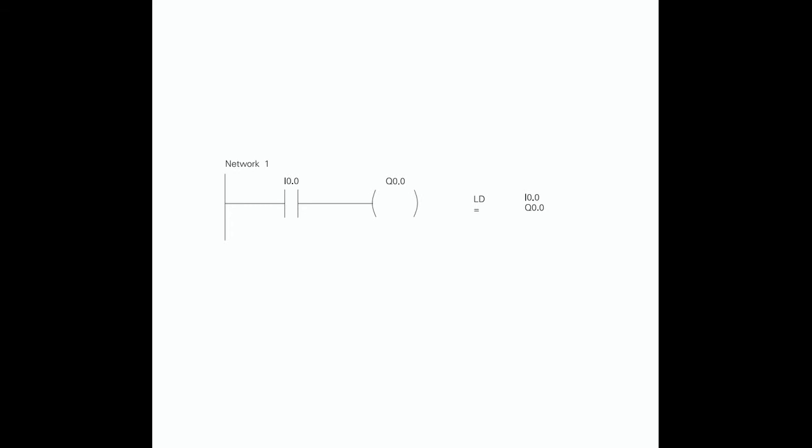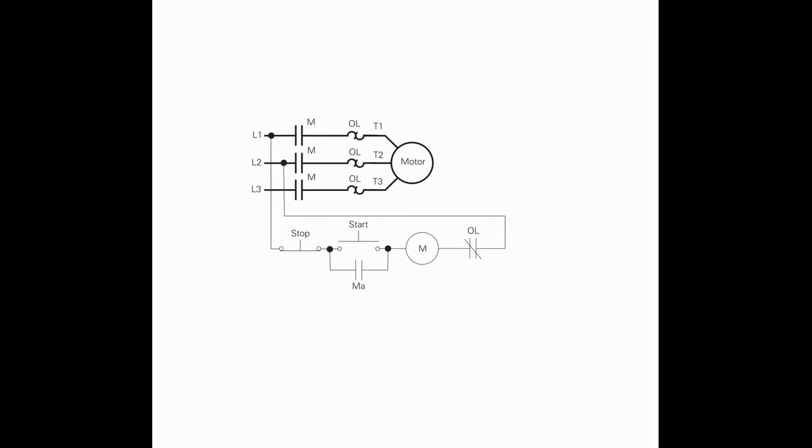Program Instruction: When the switch is open, the CPU receives a logic 0 from input I0.0. The CPU sends a logic 0 to output Q0.0 and the light is off. When the switch is closed, the CPU receives a logic 1 from input I0.0. The CPU sends a logic 1 to output Q0.0, thus activating Q0.0 and the light turns on.